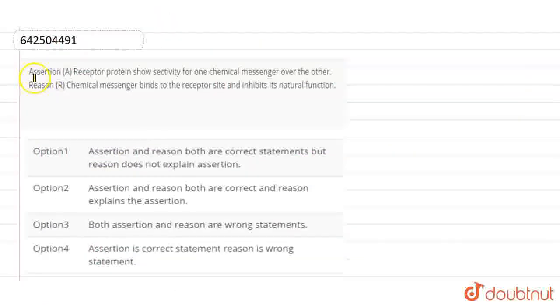Hello students, so the question is of assertion and reason here. Assertion is: receptor proteins show selectivity for one chemical messenger over the other. And the reason is: chemical messenger binds to the receptor site and inhibits its natural function.